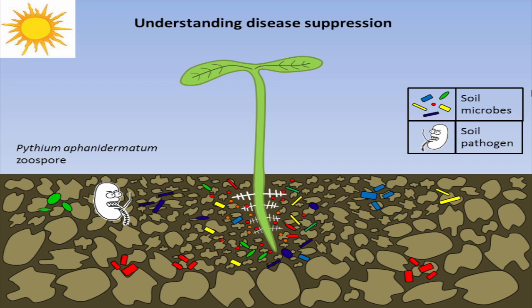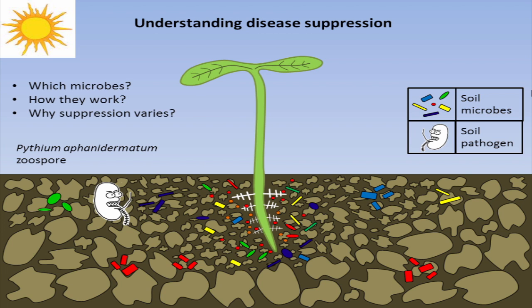A lot of people have focused on the material — be it compost — asking why one is suppressive and another isn't. They've tried to look at chemical profiles, nutrient profiles, biological profiles. They say there are microbes in this one and not in that one, so that's why. But that really doesn't hold true throughout the literature and you can't predict it. We've looked at which microbes, how they work, and why suppression varies — largely coming up empty-handed. We still don't really have a good idea.